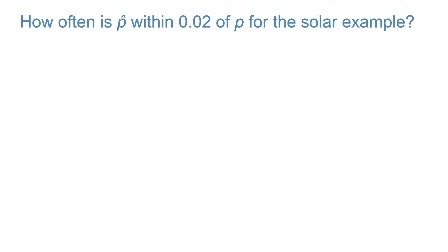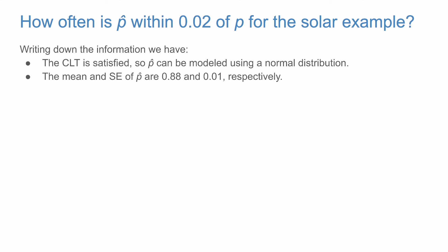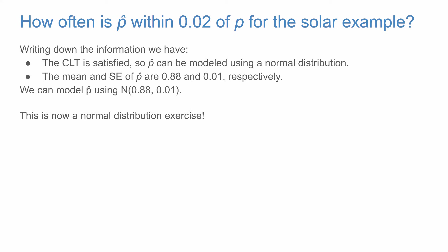How often is the sample proportion within 0.02 of the true population proportion for the solar example? We've confirmed the central limit theorem is satisfied, so p-hat can be modeled using a normal distribution. The mean is 0.88 and the standard error is 0.01. We model p-hat as normal with mean 0.88 and standard error 0.01. Like any normal distribution problem, we first draw a picture with the center at 0.88 and shade the area from 0.86 to 0.90.